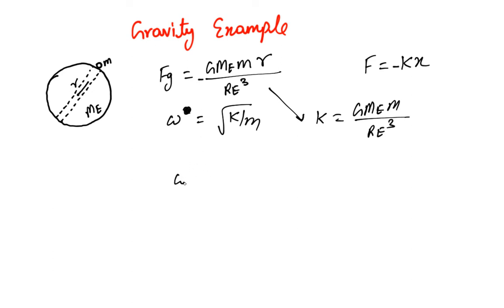So omega for this system is going to be - let's put the value of k, which is GMₑm/Rₑ³ divided by m, which gives us ω = √(GMₑ/Rₑ³). This is the angular velocity by which the ball oscillates up and down.